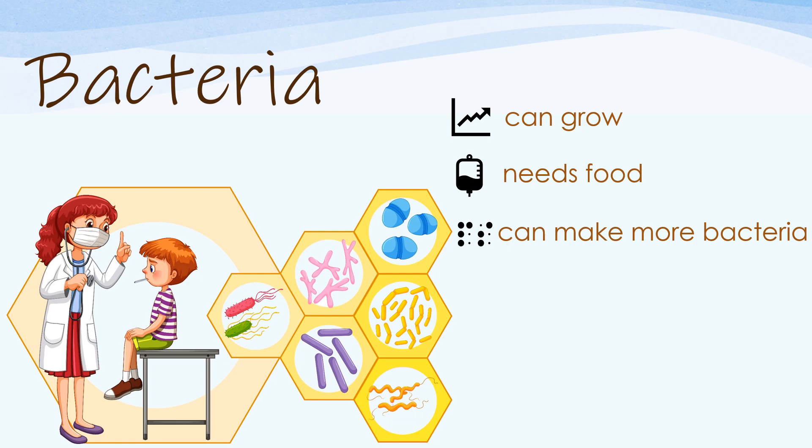Bacteria can make more bacteria. A bacterium can divide itself into two, and two will become four, until their numbers increase into hundreds and thousands. Bacteria can move on their own — can you see the bacteria in the picture? Some have tails and they are called flagella; flagella helps bacteria to move around.